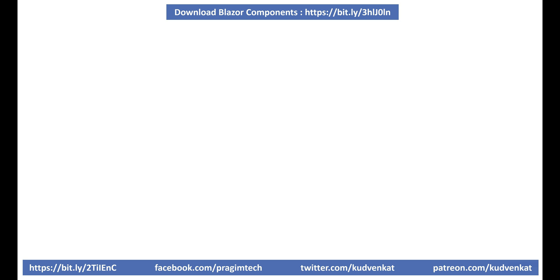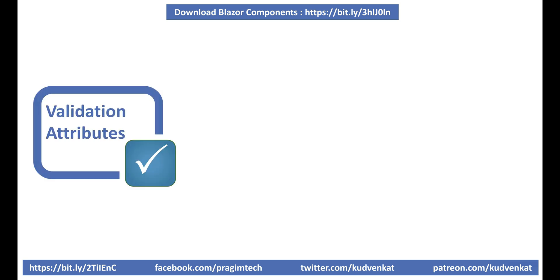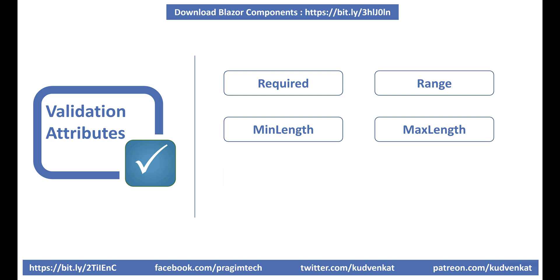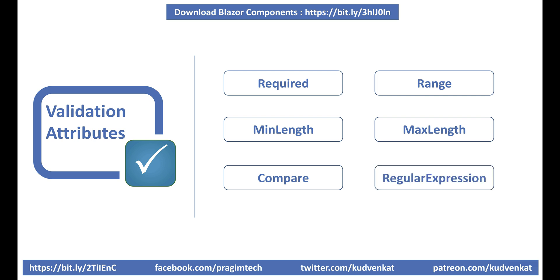.NET provides several built-in validation attributes: Required specifies the field is required; Range specifies the minimum and maximum value allowed; MinLength specifies the minimum length of a string; MaxLength specifies the maximum length; Compare compares two properties of a model — for example, compareEmail and confirmEmail, or password and confirmPassword; and RegularExpression validates if the provided value matches the pattern specified by the regular expression.